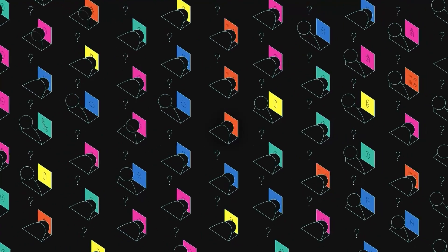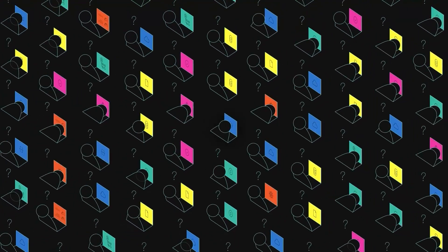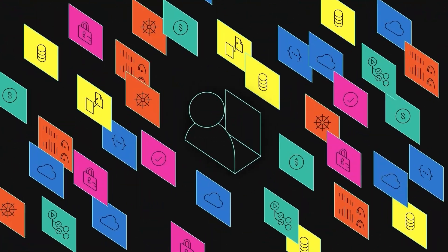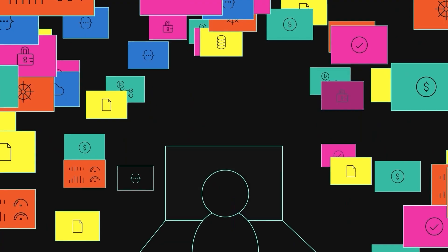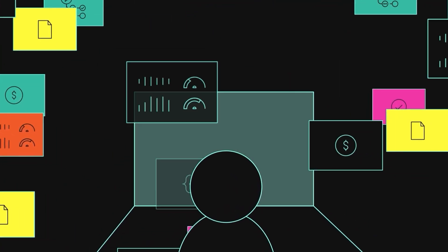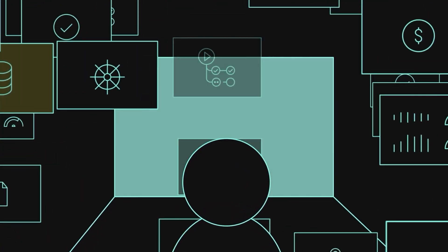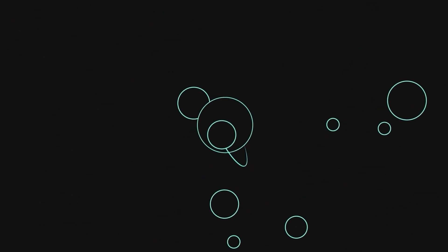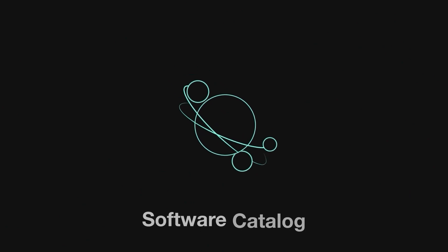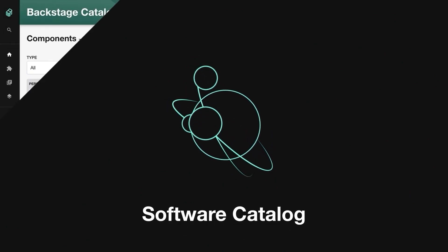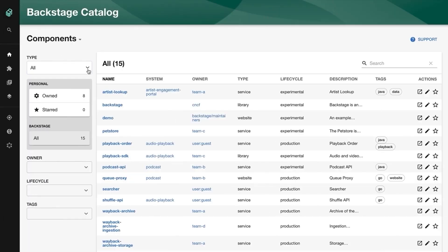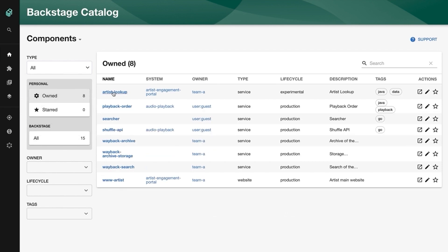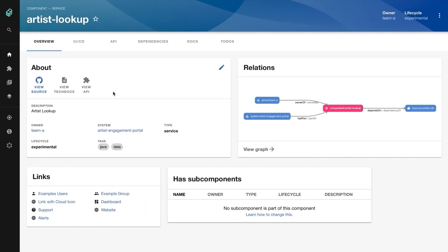The more you grow, the more chaotic and fragmented your ecosystem becomes. But with a developer portal like Backstage, all your tooling, software components, data, and documentation are centralized behind a single pane of glass — so instead of being overwhelmed by infrastructure, you're in control of it. At the center of Backstage is a software catalog which organizes all your services, websites, mobile features, libraries, and other software components in one place, regardless of how or where they're running.